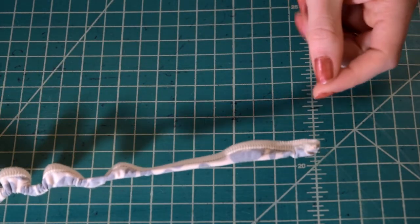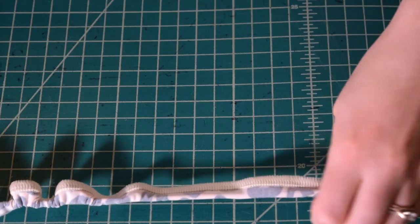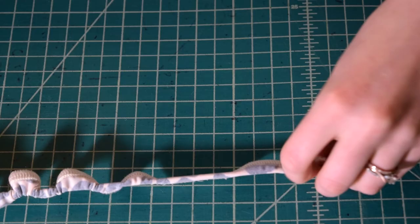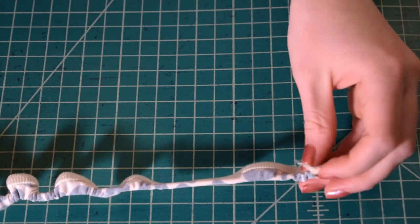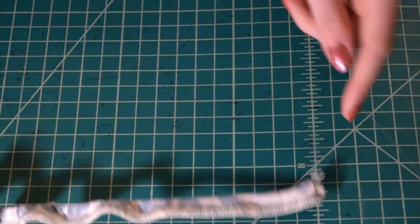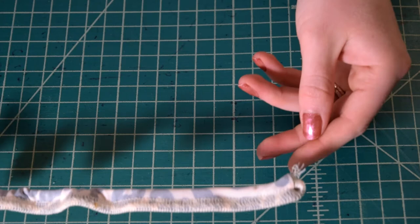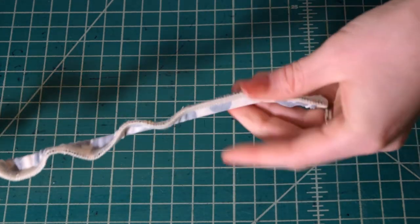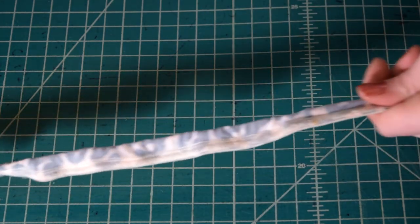Then once you have your end hooked, you can just pull it down through the tube to pull the tube right sides out. You're going to need to just get the end started here by pulling the fabric up and over the end that you're trying to pull through. Once you have it started, it should be pretty easy to just pull this through the tube.